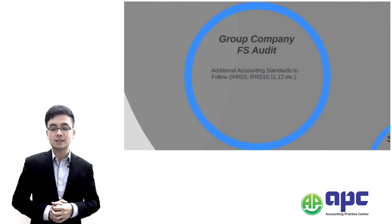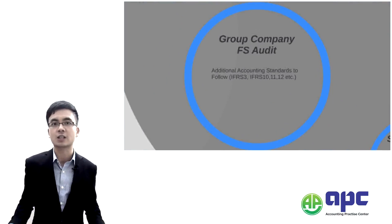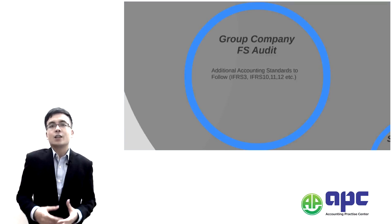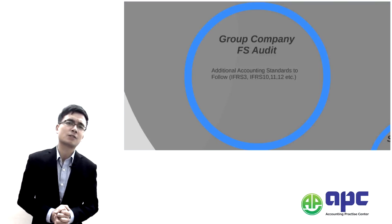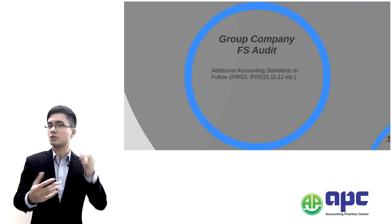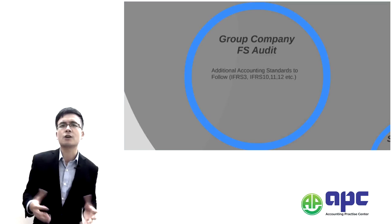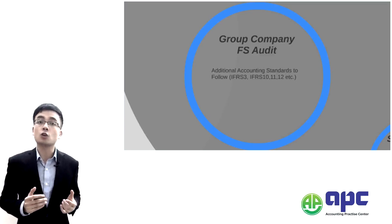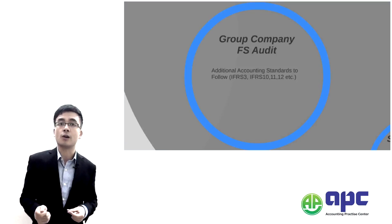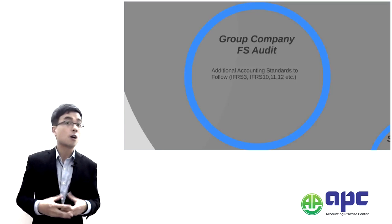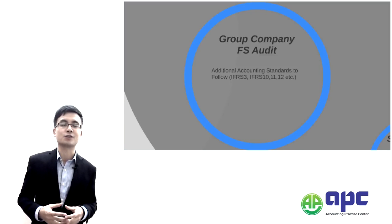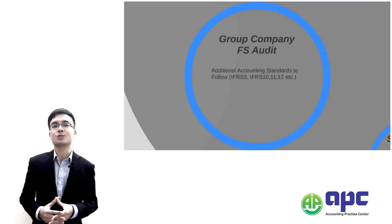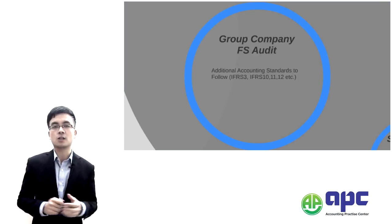For the group financial statements audit, we are going to focus on additional areas beyond the single company's financial statements audit. For example, we'll cover IFRS 3 Business Combinations, IFRS 10 for the control definitions, IFRS 11 Joint Arrangements, and IFRS 12 for disclosures. The P7 examiner will also expect you to know more complicated accounting standards, such as IAS 19 Employee Benefits, IFRS 2 Share-Based Payments, IAS 40 Investment Properties, and financial instruments. You have to know all of that before you go into the exam hall.